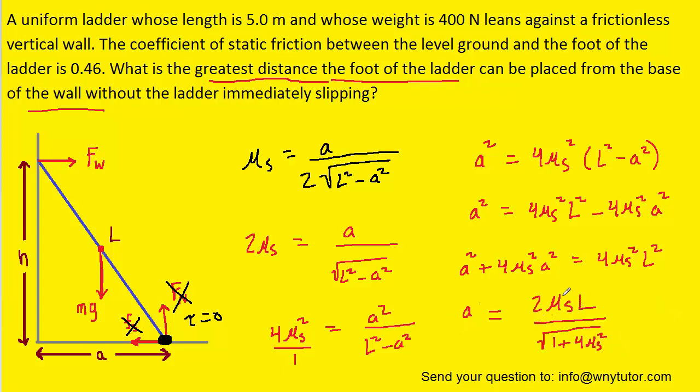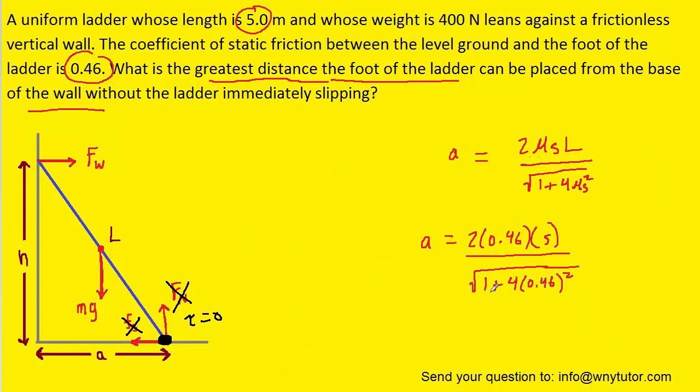We are finally ready to plug in the known values. Remember, mu S was given to us as 0.46, and the length of the ladder L is 5. And when you calculate that, you should get a value for A of approximately 3.4 meters. And that is indeed the correct answer.